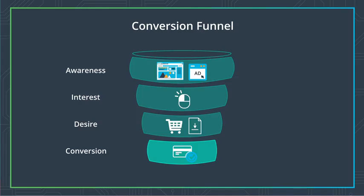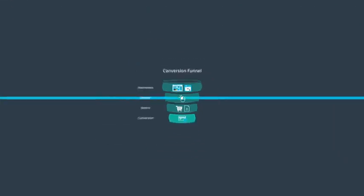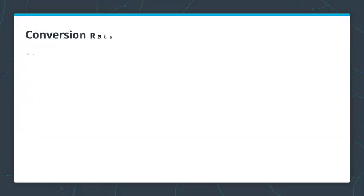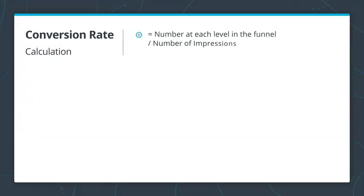So essentially, you're calculating the conversions, or your success rate at getting a potential customer to do what you want them to do at each level of the marketing funnel. And you compare this number against your impressions. Let's look at an example in the next video.